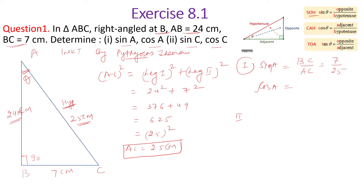Now cosine of A — using CAH, cosine equals adjacent over hypotenuse. The adjacent side to angle A is AB, which is 24, and the hypotenuse AC is 25. So cosine of A equals 24 upon 25. Now we move to the second part: sine of C and cosine of C.